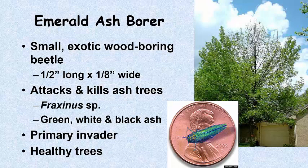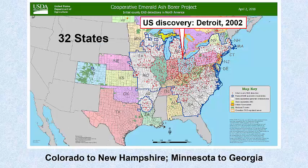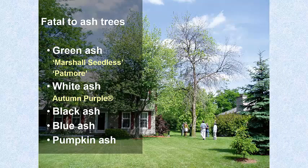It doesn't matter whether it's a green ash, white ash, or black ash — emerald ash borer will eventually attack and kill those trees. It is a primary invader that does not wait for trees to be stressed the way other borers do; it will attack perfectly healthy trees, though it prefers unhealthy ones. Emerald ash borer was discovered in Detroit in 2002, although it had likely been in the country for a decade before identification. Since then it has moved to 32 different states, from Boulder, Colorado to New Hampshire, and from Minnesota down to Georgia, killing large numbers of ash trees.